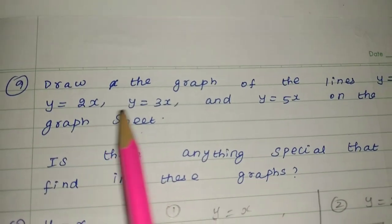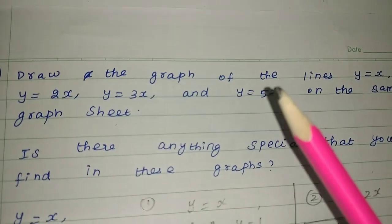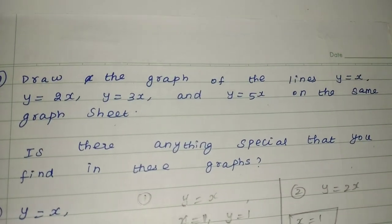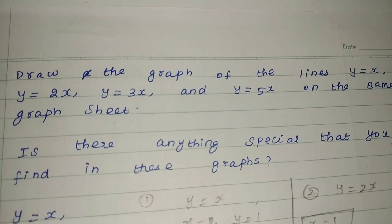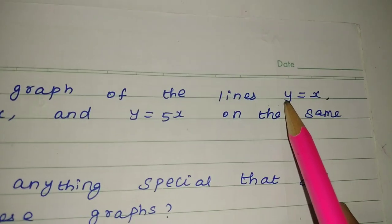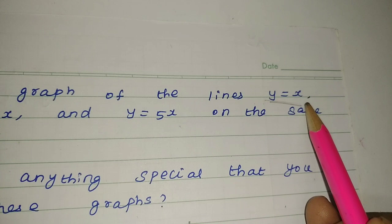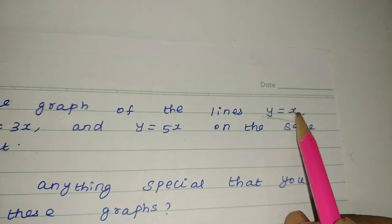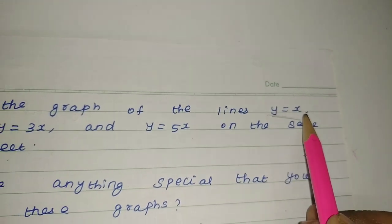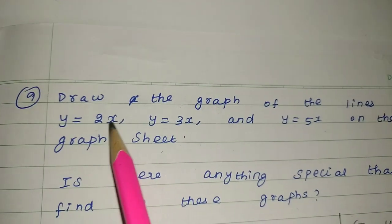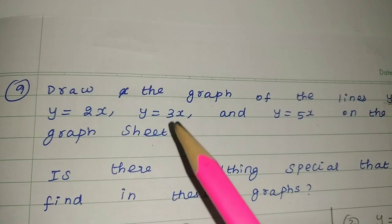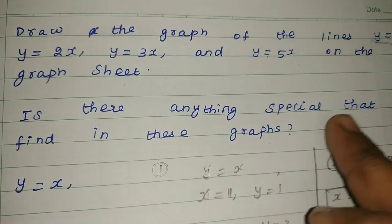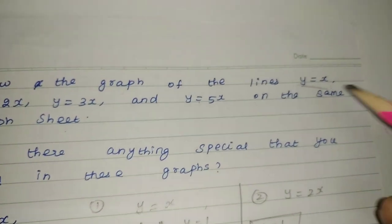For the ninth sum, draw the graph of the lines y = x, y = 2x, y = 3x, and y = 5x on the same graph sheet. We need to find if there is anything special in this graph. First, let's set up tables of values for each equation.